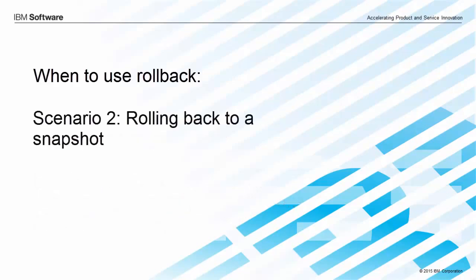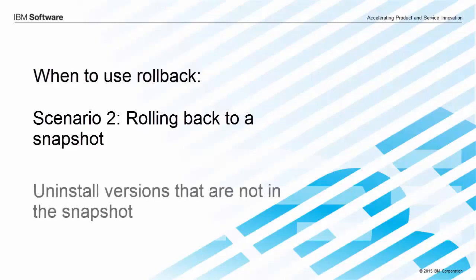The other time to use rollback is when you've got a snapshot that you know works. Deploy will get you back to that snapshot by uninstalling component versions that aren't in the snapshot. That's useful for getting an environment back to a happy state — it's a shortcut for you having to pick and choose which versions you want running in the environment and having to manually install and uninstall them.